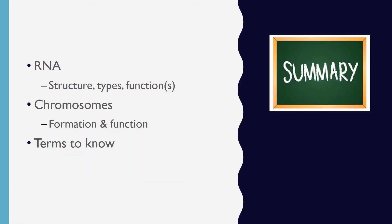To summarize this part of the lecture: we talked about RNA, chromosomes, and key terms. We discussed the structure of RNA, differences between RNA and DNA, and listed three types of RNA. We then covered how DNA coils up to form chromosomes and reviewed chromosome function. Finally, we defined important terms such as karyotype, locus, allele, genotype, and phenotype.